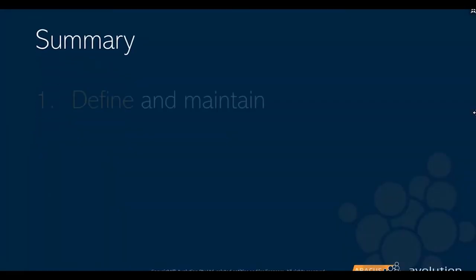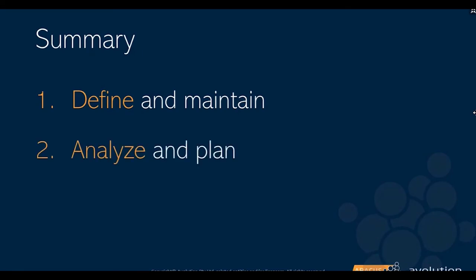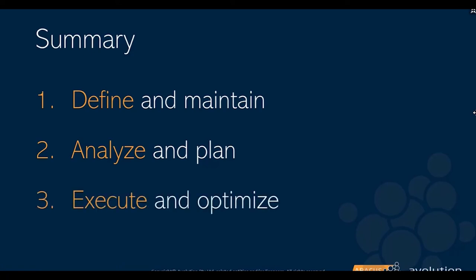A quick summary: the main thing is to define the data and maintain it within a tool — the tool is there to help. Next is to analyse that information and start planning some of those changes: what roadmaps we need to produce, technology lifecycle dates, what applications are coming into production. That helps us maintain and plan. And finally, is to execute and optimise. Once we have that plan, we shouldn't just be sitting on it. We don't want to keep it too theoretical — we need to make sure that we actually develop and execute the plans we've designed, constantly optimising that information.